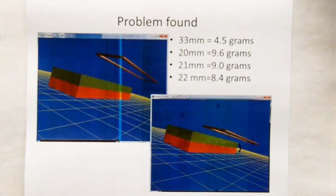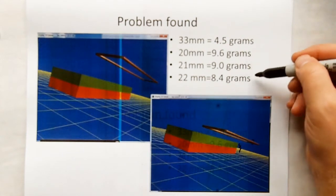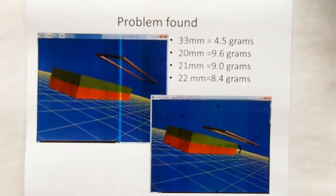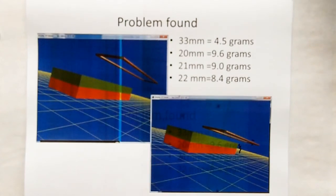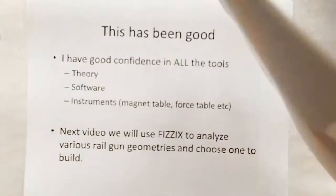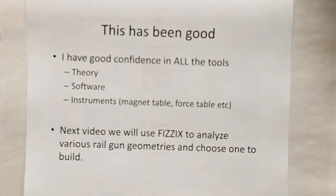But right now, as it stands, everything's good to go. We can go on, and in our next video, we're going to use the physics software to analyze various railgun geometries and choose one to build.